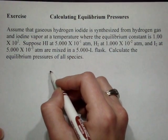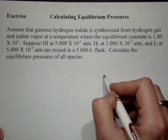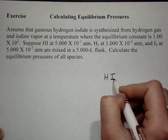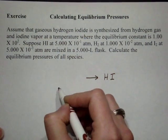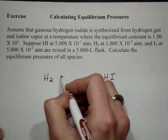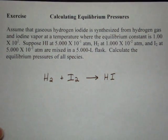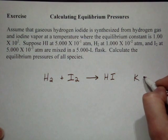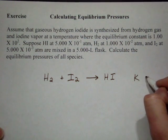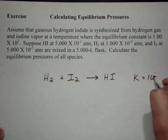We have gaseous hydrogen iodide is synthesized, so that means that's the product. Hydrogen gas and iodine vapor at a temperature where the equilibrium constant is 1 times 10 to the second. So, K equals 100 basically.